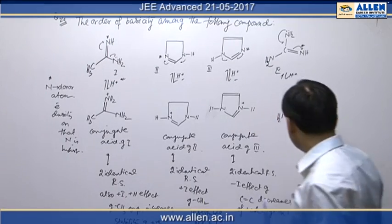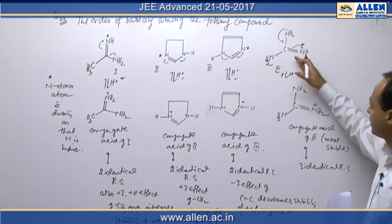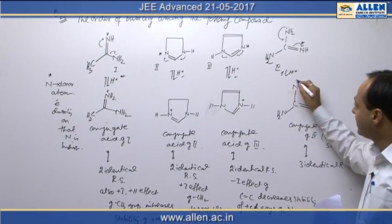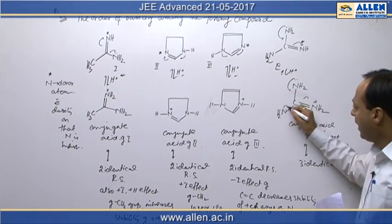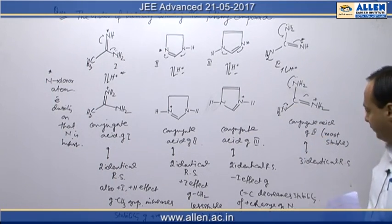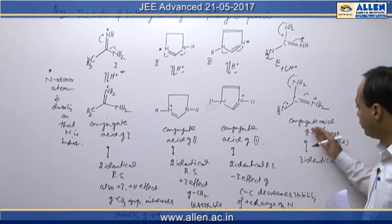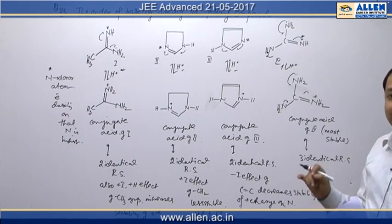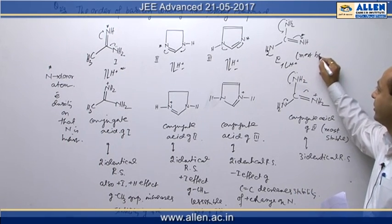First of all, here, this structure, this is called guanidine. It is conjugate acid. It has 3 identical resonance structures and compounds having more and more identical resonance structures is extremely stable. So that conjugate acid being more stable, compound number 4 is the most basic. So it is most basic system.